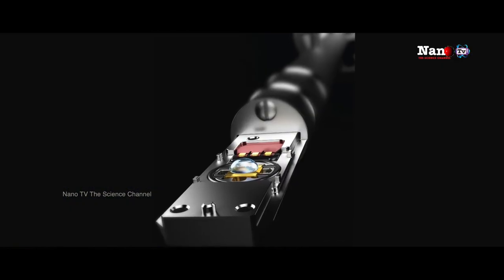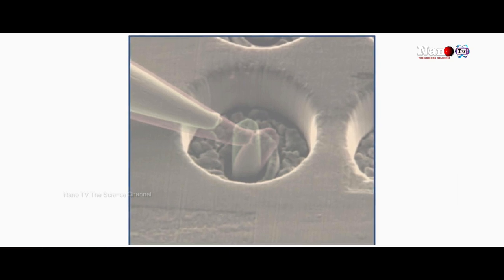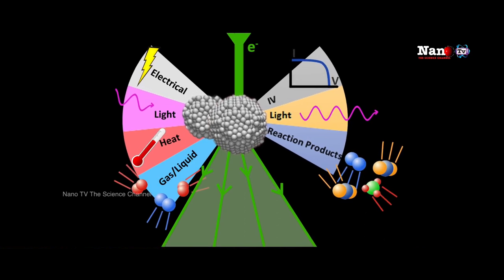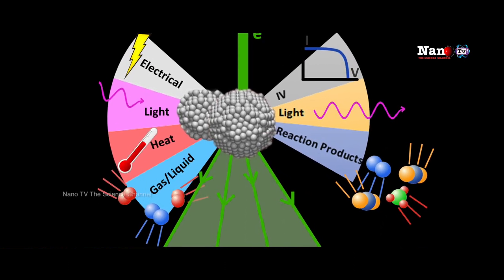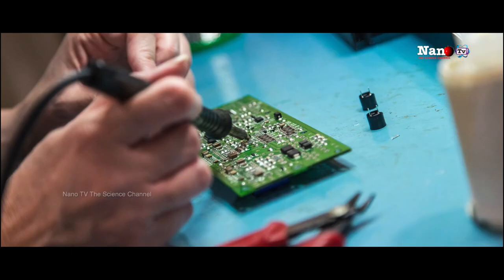Another important area is in-situ microscopy, where it is very important to understand what is happening inside the sample while it is in the machine. This is a concept developed about 15 years back. Inside the SEM, we can put a heating chamber and a cooling chamber. We can heat the sample up to 1000 degrees centigrade and cool the sample down to minus 170 degrees centigrade. The whole industry is now trying to use very fast heating and cooling to change and understand the structure.